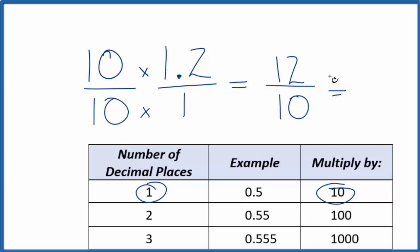We could reduce this further. 2 goes into 12 six times, and it goes into 10 five times. And we have this improper fraction.